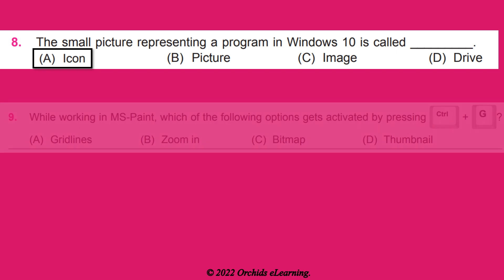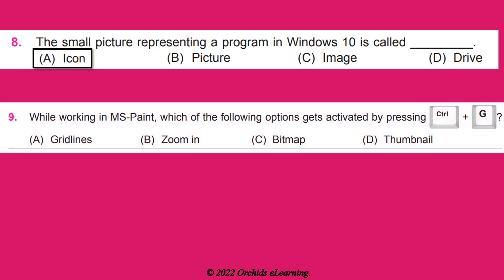While working in MS Paint, which of the following options gets activated by pressing Ctrl + G? Answer: A — Gridlines.